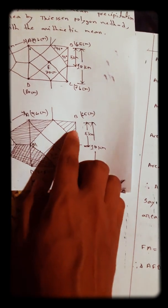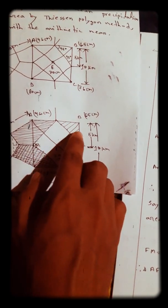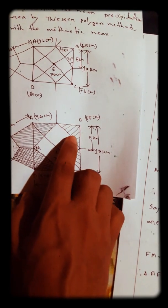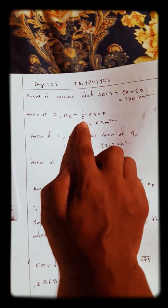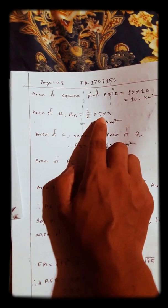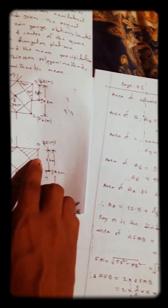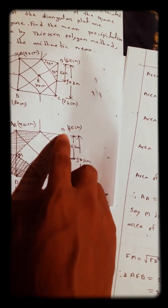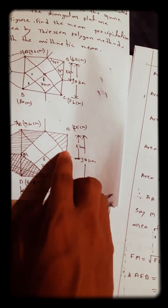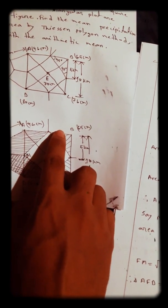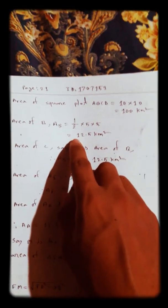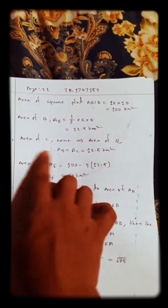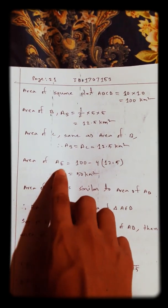Area of B and area of C are similar. For each triangle, the area is half the base times height — half × 5 × 5. The base and height are both 5 kilometers, so we get the value 12.5 square kilometers for area B, and area C is the same: 12.5 square kilometers.